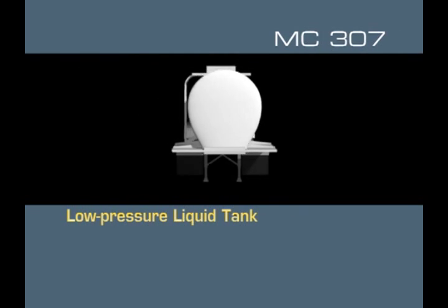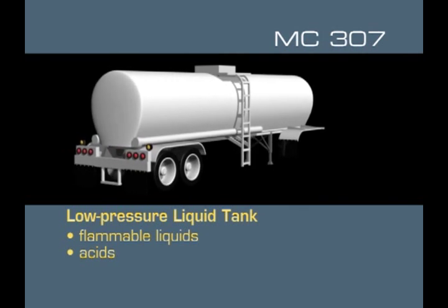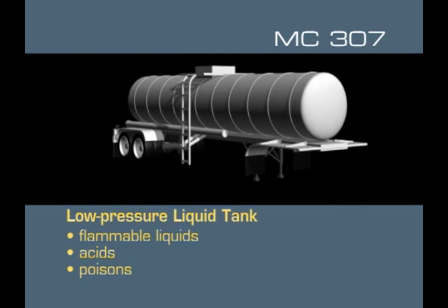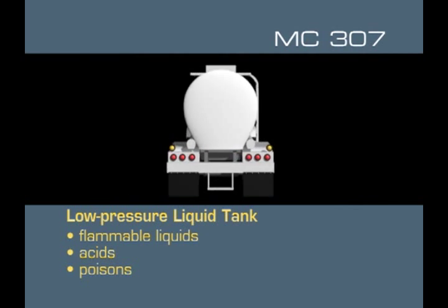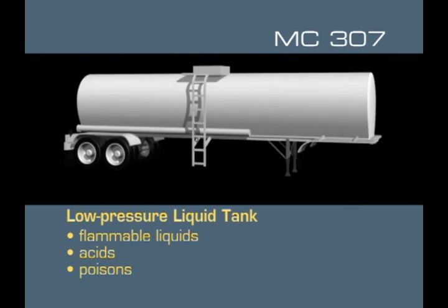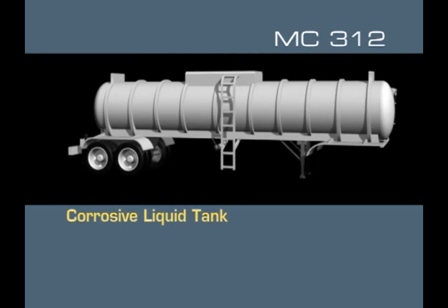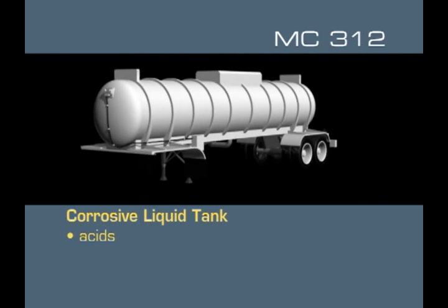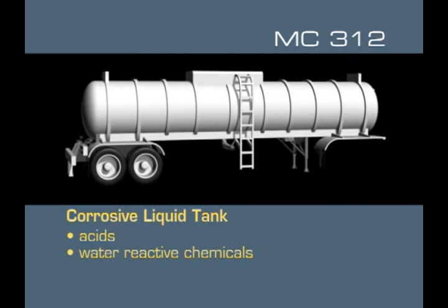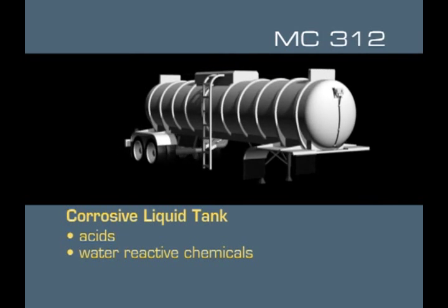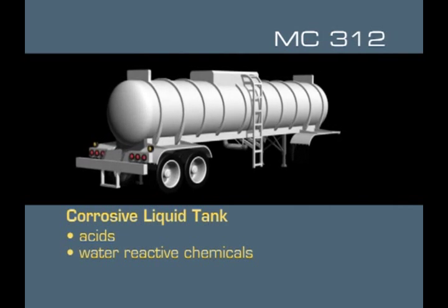The MC-307 low-pressure chemical tank transports flammable liquids, acids, and poisons. These tanks are insulated with a horseshoe shape or are uninsulated with a round shape and stiffening rings. MC-307s have a top manhole and can carry up to 6,000 gallons or 22,706 liters of material. The MC-312 corrosive liquid tank is a top-loading tank that also carries up to 6,000 gallons or 22,706 liters of liquid acids. It is round with stiffening rings that provide rollover protection, and can carry water-reactive chemicals.